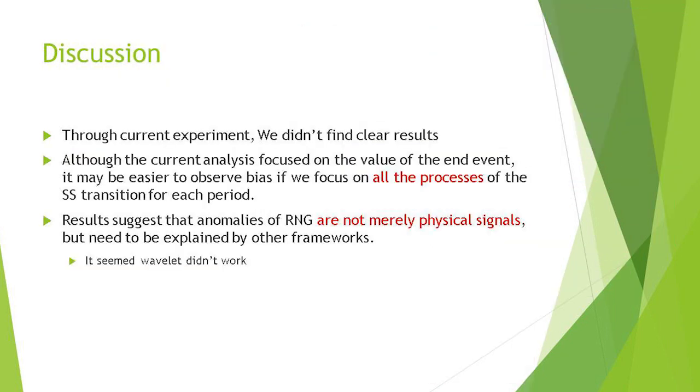So this question. Through current experiment, we didn't find clear results. Although the current analysis focused on the values of the end event, it may be easier to observe bias if we focus on all the processes of the sum square transition for each period. Results suggest that anomalies of RNG are not merely physical signals but need to be explained by other frameworks. I think it seems wavelet didn't work.